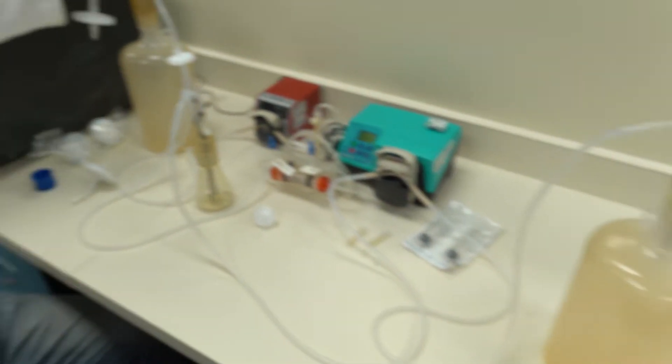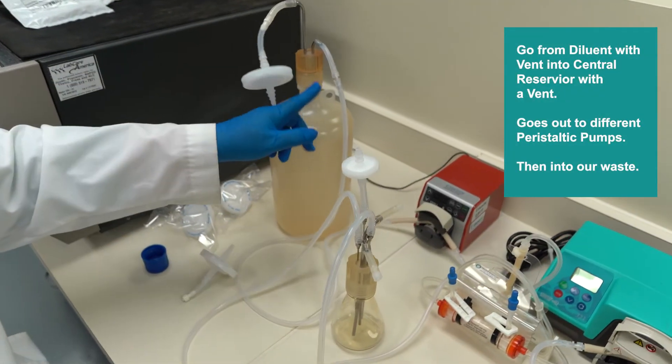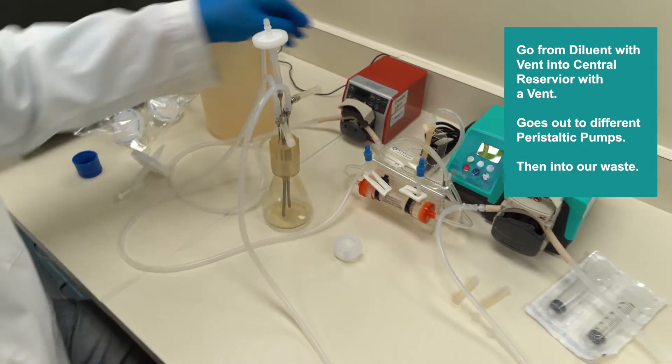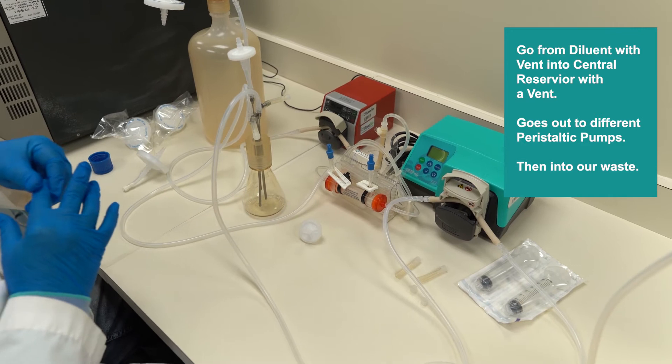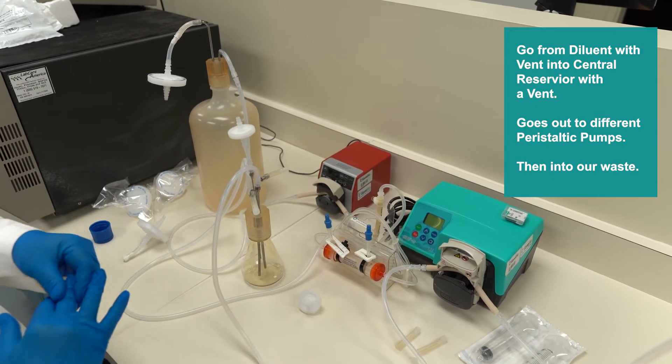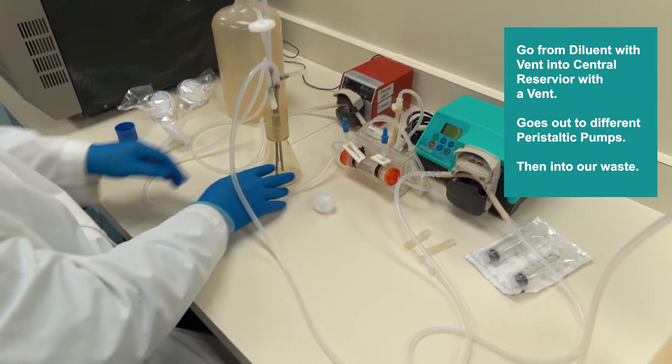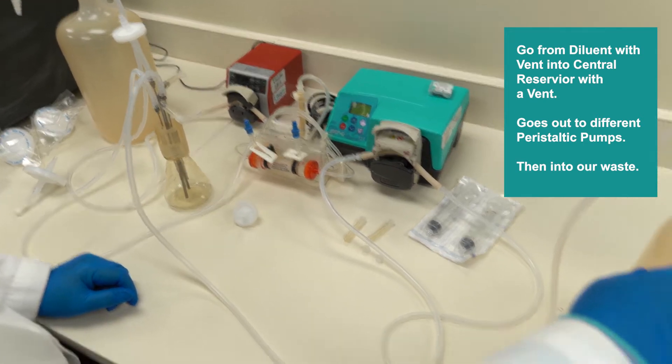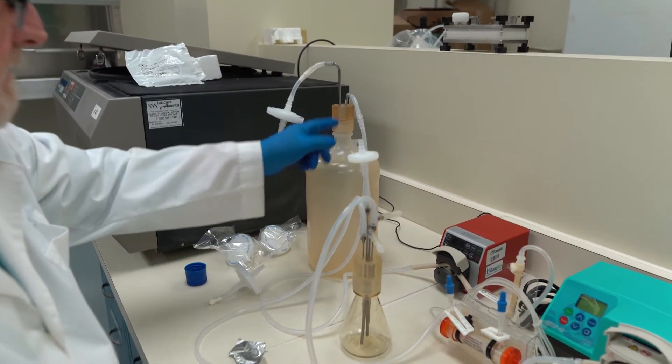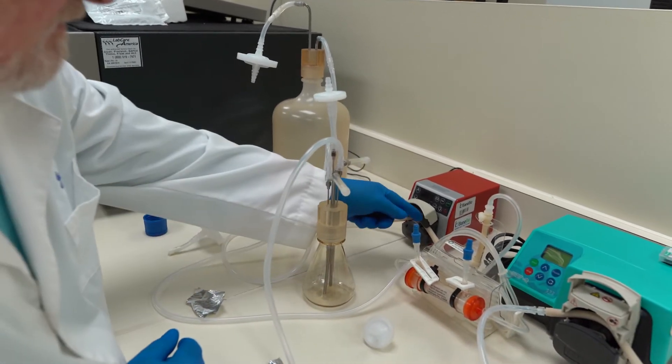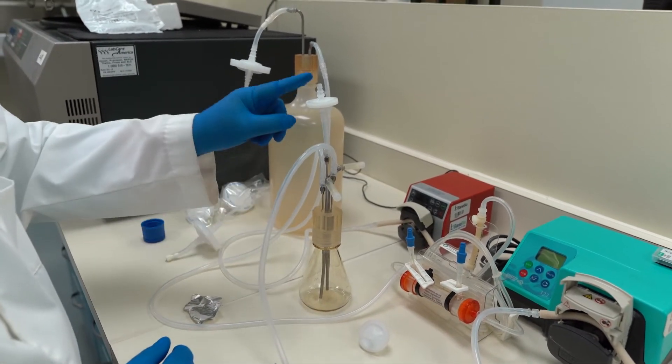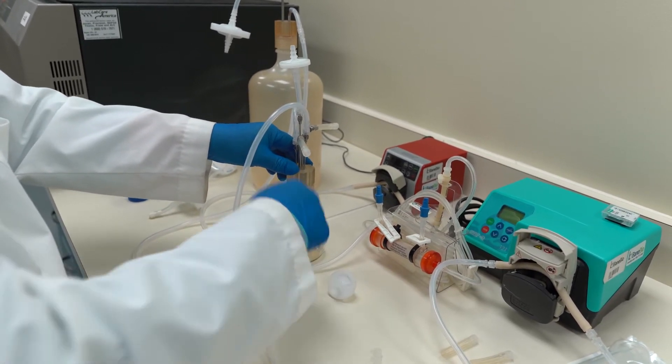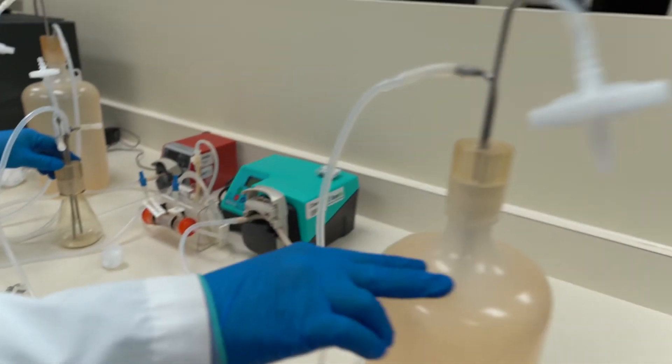So we go from our diluent. A vent out of the bottom of the bottle into the central reservoir with a vent. Diluent out. And they each have their own separate peristaltic pumps. There are different ways that we can set that up but it's easiest now with little digital peristaltic pumps to set the flow rates where we want them to be to maintain the central reservoir at a constant level. And then into our waste. Here we have our vent. Tubing down at the bottom. Diluent through the pump. Central reservoir. We have our vent. The level of the central reservoir remains constant here. Down in the peristaltic pump. Back to our waste.